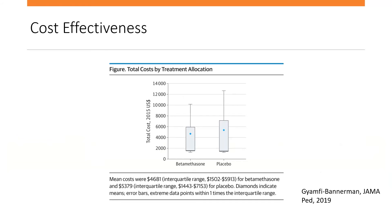On cost-effectiveness: Dr. Gyamfi-Bannerman, the lead author on the ALPS trial, subsequently published a cost-effectiveness analysis looking at mean costs for receiving versus not receiving late preterm steroids. They found mean costs of $4,681 for the betamethasone group and $5,379 for placebo. When they looked at the difference between the two, it was statistically significantly lower for the betamethasone-administered group, suggesting that from a cost-effectiveness perspective this is a good intervention.